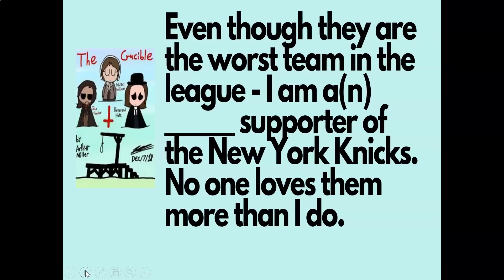Of those 40 words from The Crucible, I've written a sentence or two for each one with a blank to be filled in with the appropriate tier-two word from the play. For example, kids come up to the Hungry Hippo, gather their marbles, and the team with the most marbles gets the first question: 'Even though they are the worst team in the league, I am a blank supporter of the New York Knicks — no one loves them more than I do.'